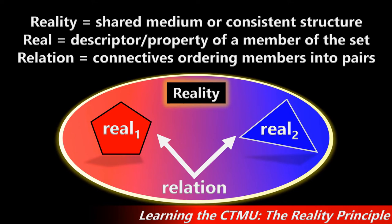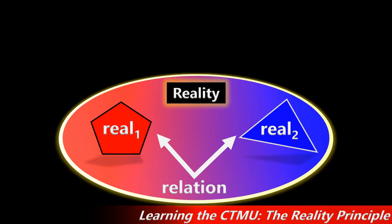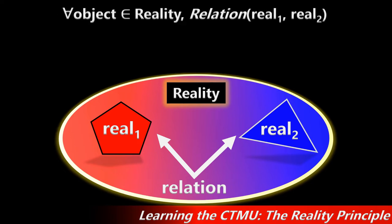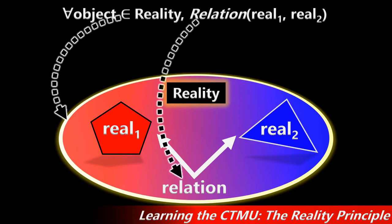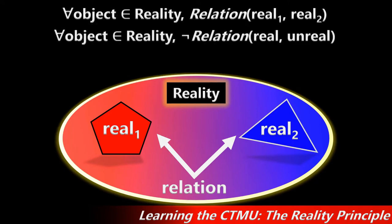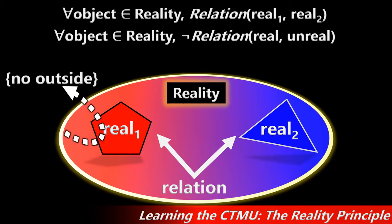A relation is a mathematical connective that orders elements or members into pairs. Thus a real relation is any relation that performs this on any real object. The reality principle — reality contains all and only that which is real — can now be formulated as a descriptive attribution: for all objects within the domain reality, there is a relation between real object one and real object two. The counterfactual states that for all real objects within the domain reality, no relation exists between any real and unreal pairing. Outside reality, from the topological perspective, there doesn't even appear to be anything to be contained, which would also mean there is no relation between real and unreal arguments.